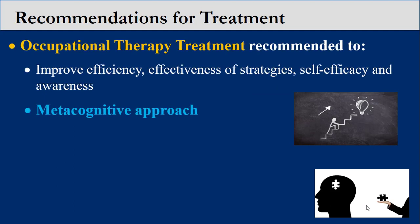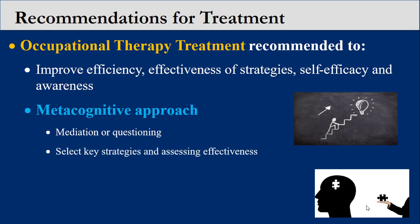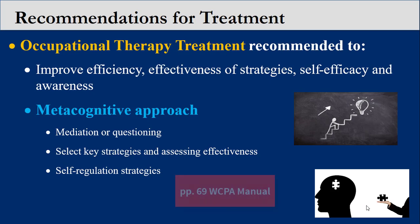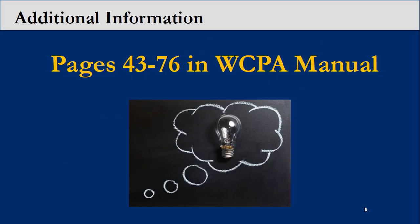OT intervention is recommended to help empower Kathy to use strategies that reduce performance errors and manage cognitive symptoms. Techniques may include mediation or questioning and self-assessment to promote self-monitoring and self-efficacy. Kathy may also benefit from support in strategy selection and implementation. Finally, self-regulation strategies may also help to control anxiety during multi-step or complex tasks. Recommendations are described in greater detail on page 69 of the WCPA manual. Please refer to pages 43 to 76 of the WCPA manual for more information about the variety of WCPA performance patterns and implications for treatment.